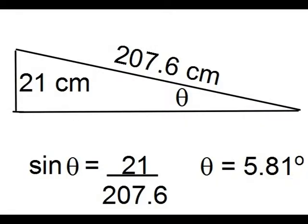The angle of the slope was measured using the length of the hypotenuse of the air track, 207.6 centimeters, and the opposite side, 21 centimeters. The angle was 5.81 degrees.